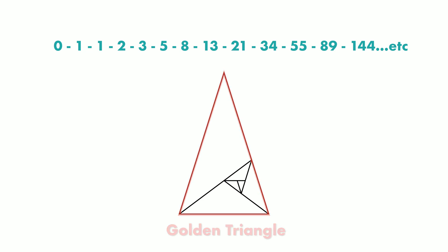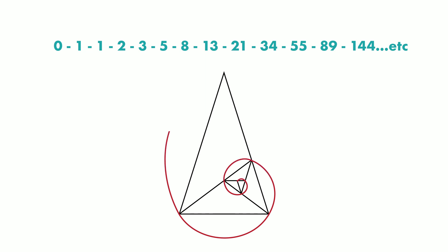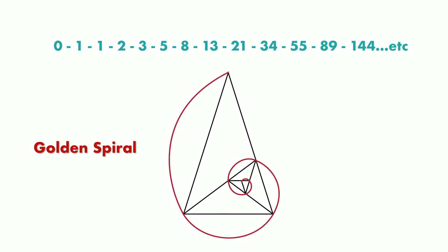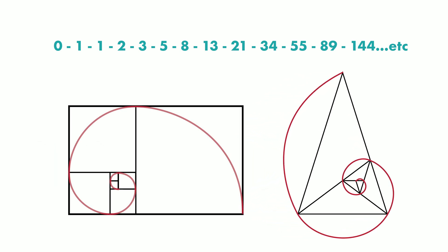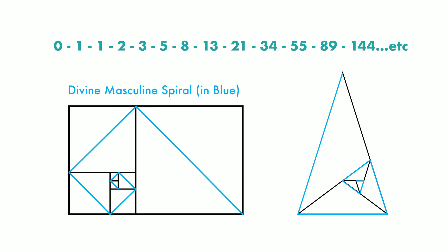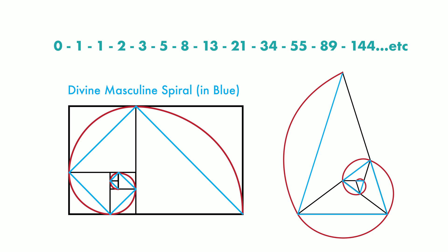In the golden triangle, similarly to the golden rectangle, when we connect the points using these arcs, we get the golden spiral here as well. I want to draw your attention: if we draw a straight line between the opposite corners, we get another variant of the golden spiral, which represents the male aspect of the spiral. And the swirly, continuous ones represent the female version or the female aspect of the spiral.